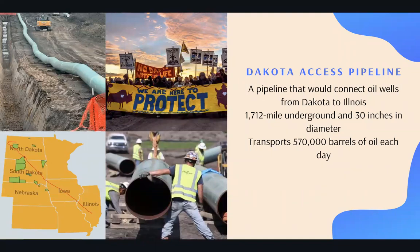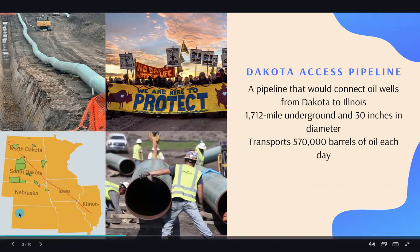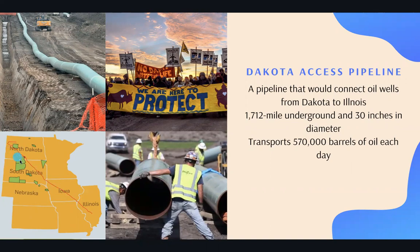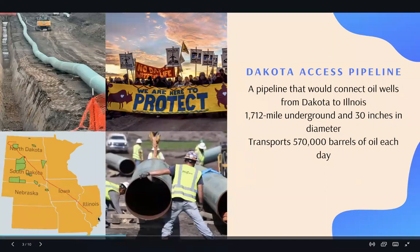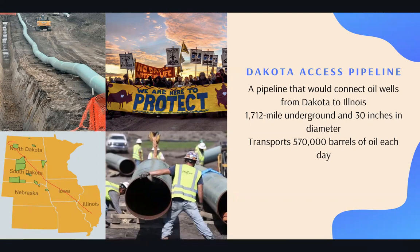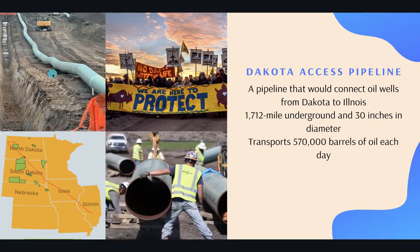So what is the Dakota Access Pipeline? It is a pipeline that would connect oil wells from Dakota to Illinois. In the bottom left of our screen, you can see a map. It shows the pipeline beginning in North Dakota, going through South Dakota and Iowa, and ending in Illinois. The pipeline is 1,712 miles long and it is 30 inches in diameter. You can see that in the top left picture — that is what the pipeline looks like.